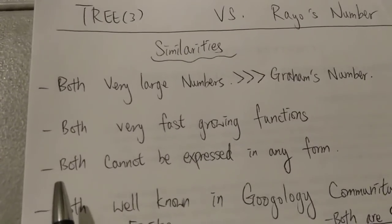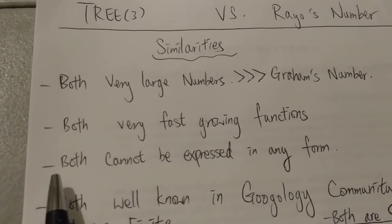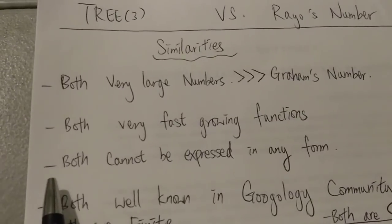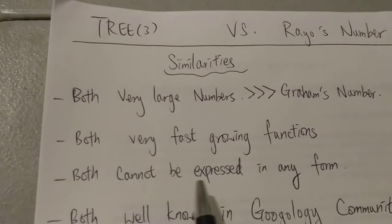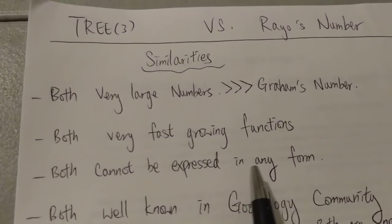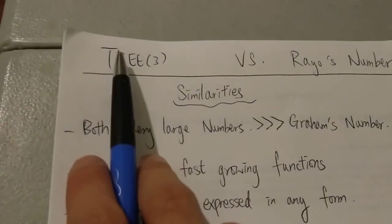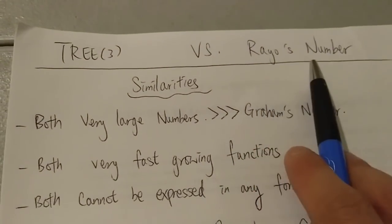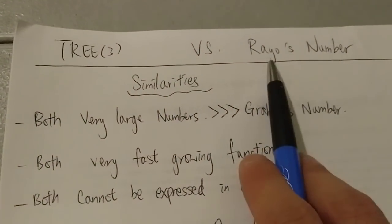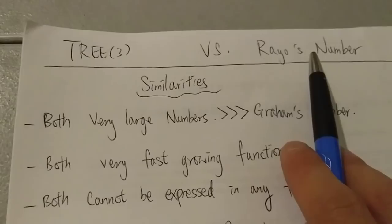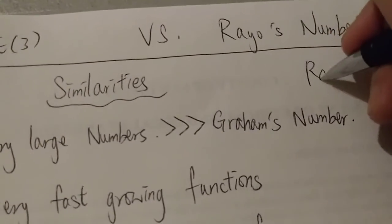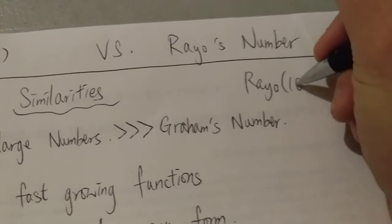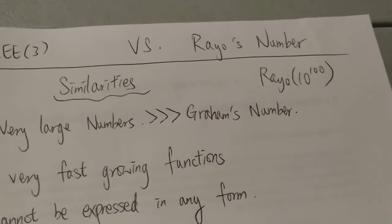And therefore, which leads to the third one, both these numbers cannot be expressed in any other form other than TREE(3) and Rayo's number. So this one is Rayo of googol, so it looks like this is how you usually write or represent Rayo's number.